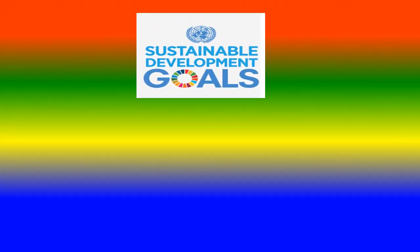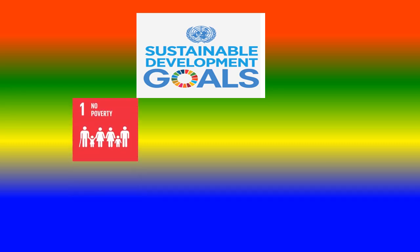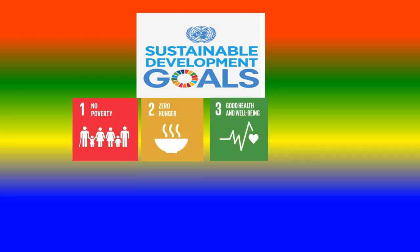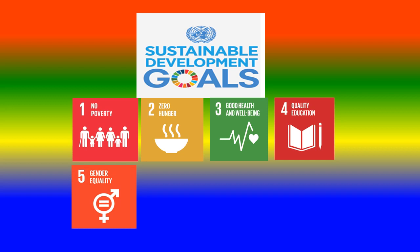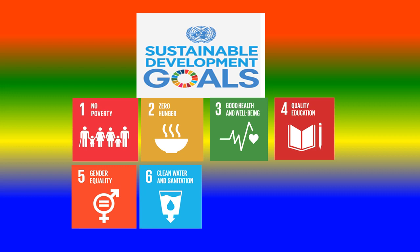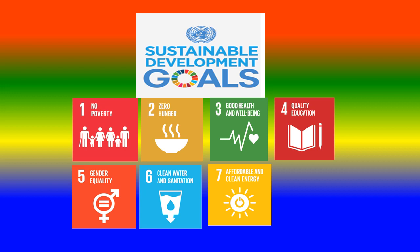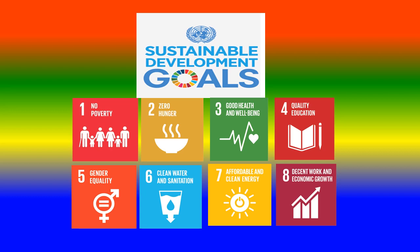Details about Sustainable Development Goals: 1. No Poverty. 2. Zero Hunger. 3. Good Health and Wellbeing. 4. Quality Education. 5. Gender Equality. 6. Clean Water and Sanitation. 7. Affordable and Clean Energy. 8. Decent Work and Economic Growth.